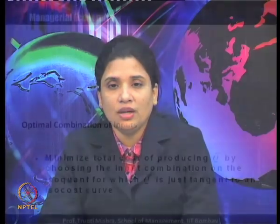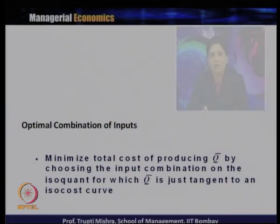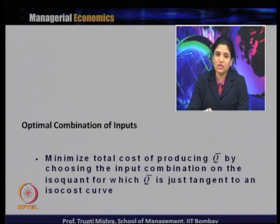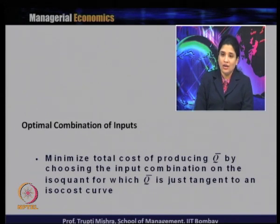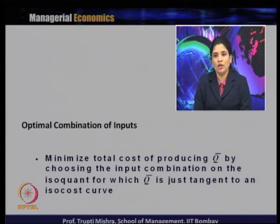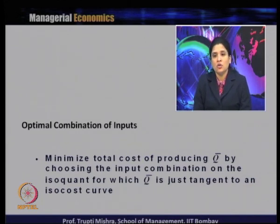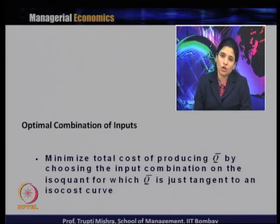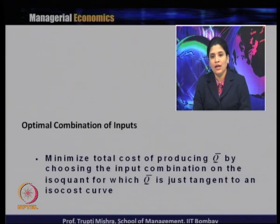What is the optimal input combination? This minimizes the total cost of producing a given level of output Q. The optimal combination of inputs minimizes total cost of producing Q by choosing the input combination on the isoquant for which the isoquant is just tangent to the iso cost curve. So Q-bar is the given level of output, and the optimal combination of inputs will minimize the total cost of producing this Q-bar.